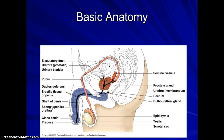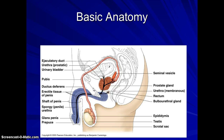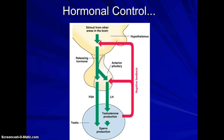We'll start with basic anatomy. We're going to go through the testes, the epididymis, the vas deferens, the seminal vesicle, prostate gland, bulbourethral gland, and through the penis. I'll go through functions in this video, but make sure you watch the video that uses the model that you will be tested on.